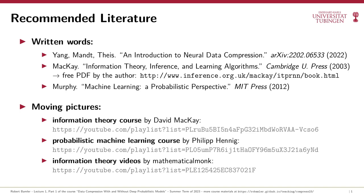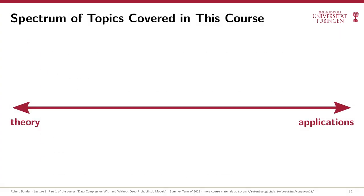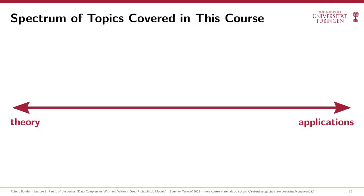But there are two things that I believe set this course apart from existing resources. First, we'll cover the entire spectrum from theory to applications. We'll both go through mathematical proofs of fundamental information theoretical bounds and relations, but we'll also implement several highly effective compression methods and probabilistic machine learning models in real code.